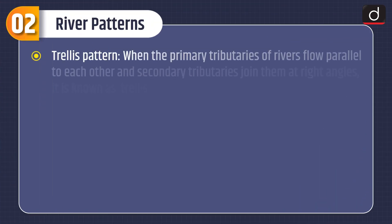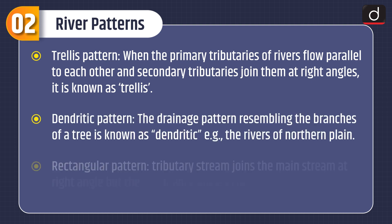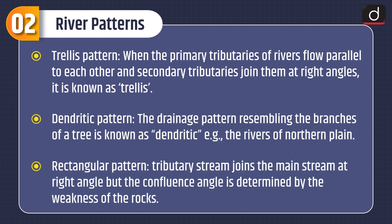Now let's discuss about river patterns. The first is the trellis pattern, where primary tributaries of rivers flow parallel to each other and secondary tributaries join them at right angles. The dendritic pattern resembles the branches of a tree — for example, the rivers of the northern plain.